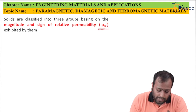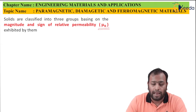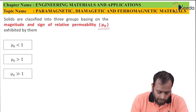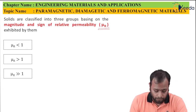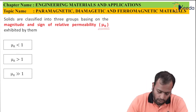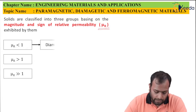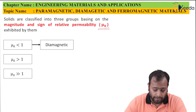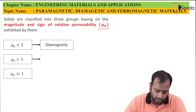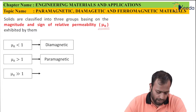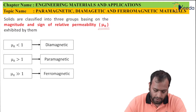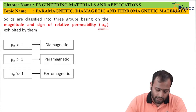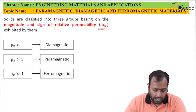Based on the sign of relative permeability, we have three types. Case 1: μr less than 1 — the material is diamagnetic. Case 2: μr greater than 1 — the material is paramagnetic. And Case 3: μr much much greater than 1 — it is ferromagnetic. These are the three types of materials classified based on the value of μr.